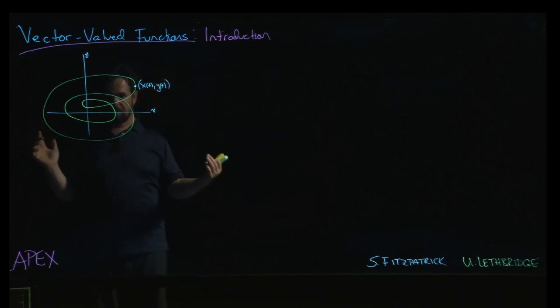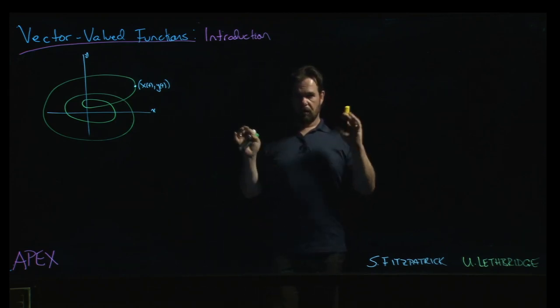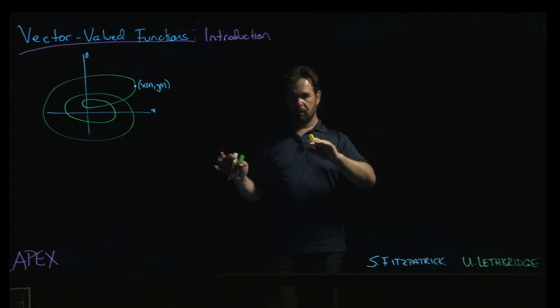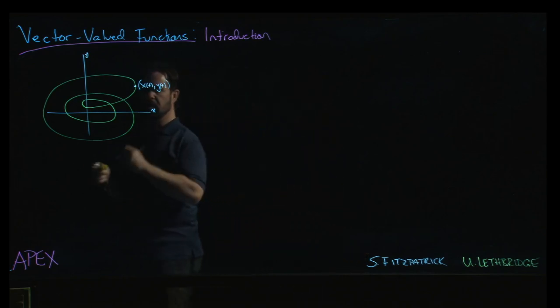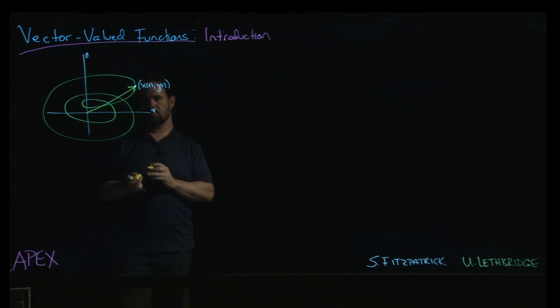So now we're going to take just a slight shift in perspective here, and we're going to think back to the previous chapter on vectors, and we talked about the fact that if you think about a vector in that sort of standard position with its tail at the origin, we can sort of identify any point with the corresponding position vector. So that point x of t, y of t, we can draw a vector from the origin to that point.